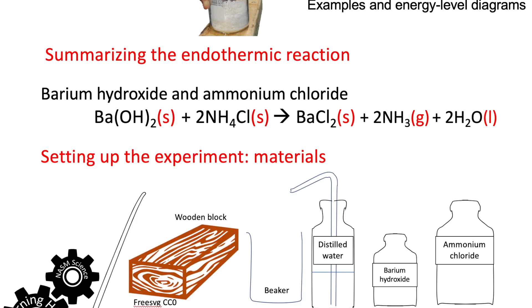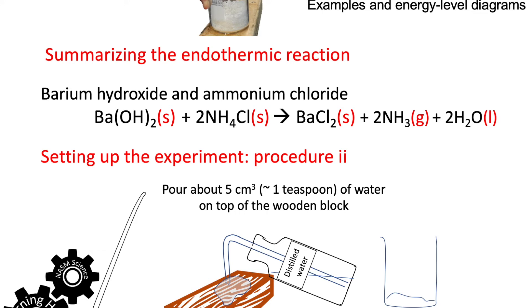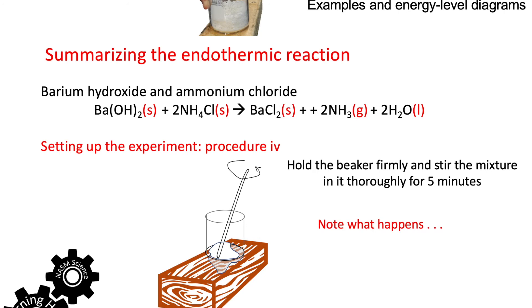Here is the setup of the experiment — the equipment you will need and the chemicals are listed. Use about 30 grams of barium hydroxide and 10 grams of ammonium chloride. Put a small amount of distilled water onto a wooden block, place the beaker containing the reactants on top of about a teaspoonful of water on the wooden block, then stir. Hold the beaker firmly, stir steadily for a few minutes, and note down what happens.